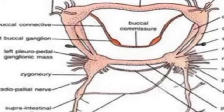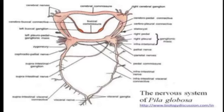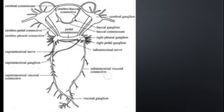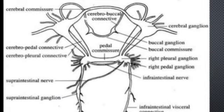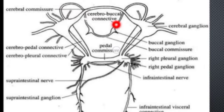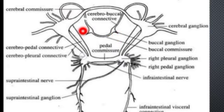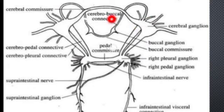The connectives connect two different ganglia, and there are a total of eight connectives. The first is the cerebral-buccal connective. There are two cerebral-buccal connectives — one on the right connecting the right cerebral ganglion to the right buccal ganglion, and one on the left. The second is the cerebral-pleural connective, which connects the cerebral ganglion to the pleural ganglion.